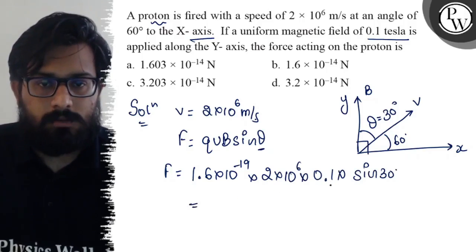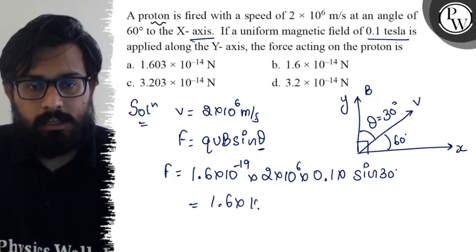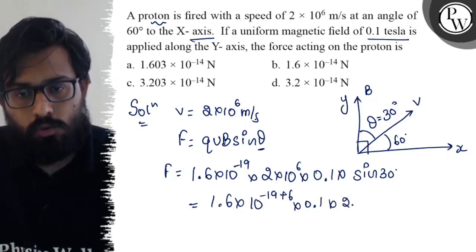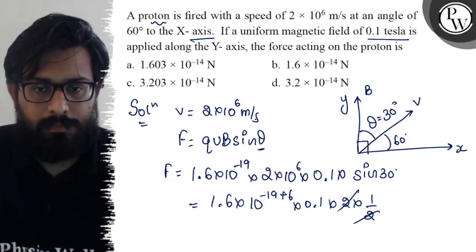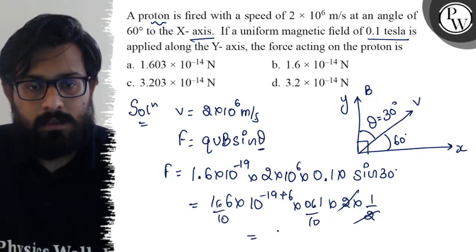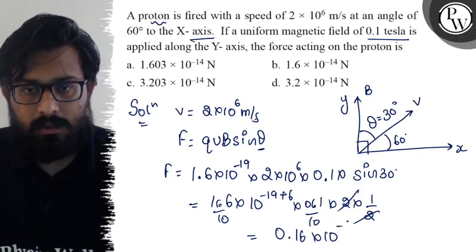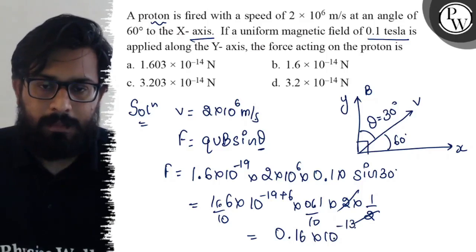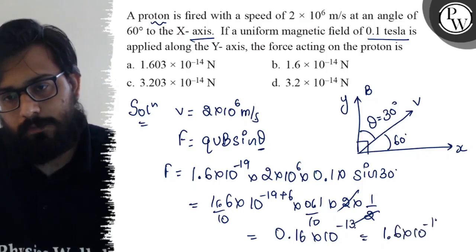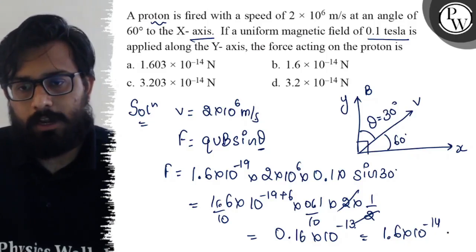So, here we have to simplify, so sin of 30 value put 1.6 into 10 to the power minus 19, plus 6 into 0.1 into 2 into sin of 30 value. So, here we have to cancel out, which comes out to be 1.6 into 10 to the power minus 14 newton.